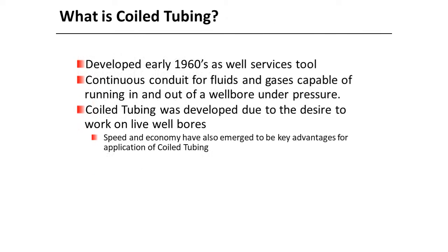What is coiled tubing? Coiled tubing was developed in the early 1960s as a well services tool. It has a continuous conduit for fluids and gases, and is capable of running in and out of a well bore under pressure. Coiled tubing was developed due to the desire to work on well bores having pressure. Speed and economy have also emerged as key advantages for application of coiled tubing.